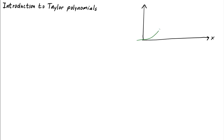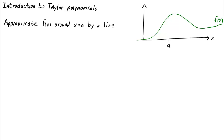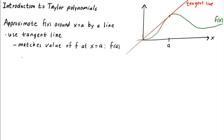Imagine I have a function f of x whose graph looks like this, and I want to approximate f around a point, let's say around x equals a. One way to do this is via the tangent line. The tangent line is a linear function that matches both the value of f and its slope, or derivative, at the point x equals a.